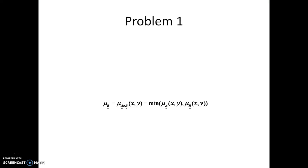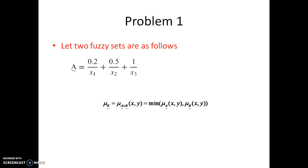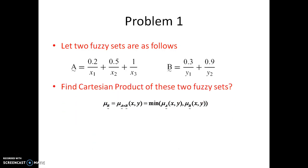Let us see the first problem. Let two fuzzy sets be as follows. If this is a fuzzy set and this is another fuzzy set, find the Cartesian product of these two fuzzy sets. We have the formula directly: mu R, which is mu A×B of (x, y), is equal to the minimum of mu A of x and mu B of y.